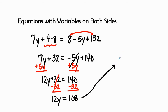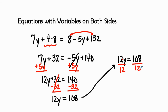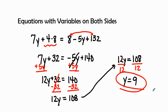So we have 12y equals 108. We divide by its coefficient — the 12 and y are separated by a multiplication sign, so the opposite of multiplication is division. We divide both sides by 12. 12 divided by 12 is 1y, and 108 divided by 12 is 9. Our final answer is y equals 9.